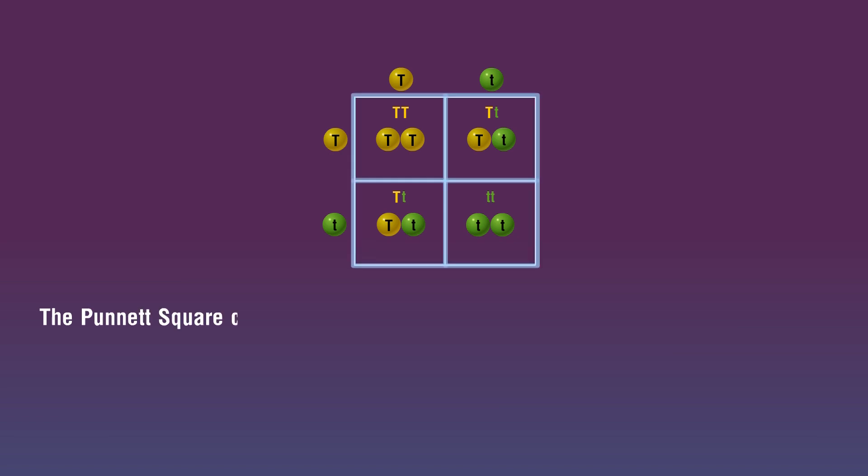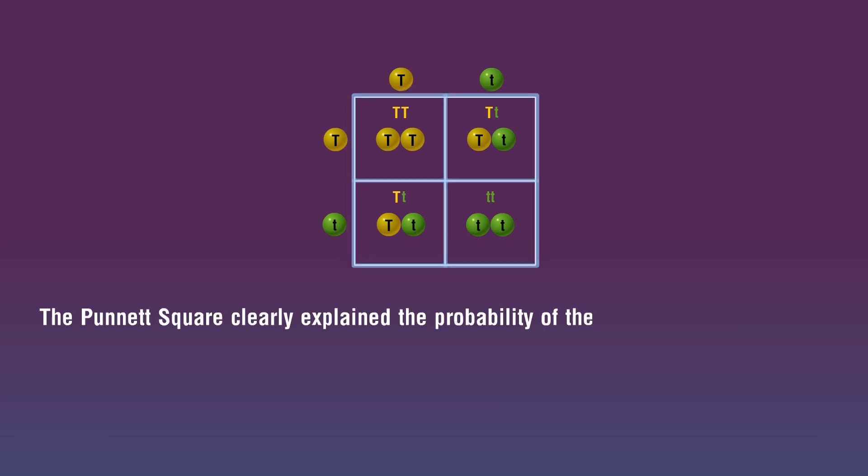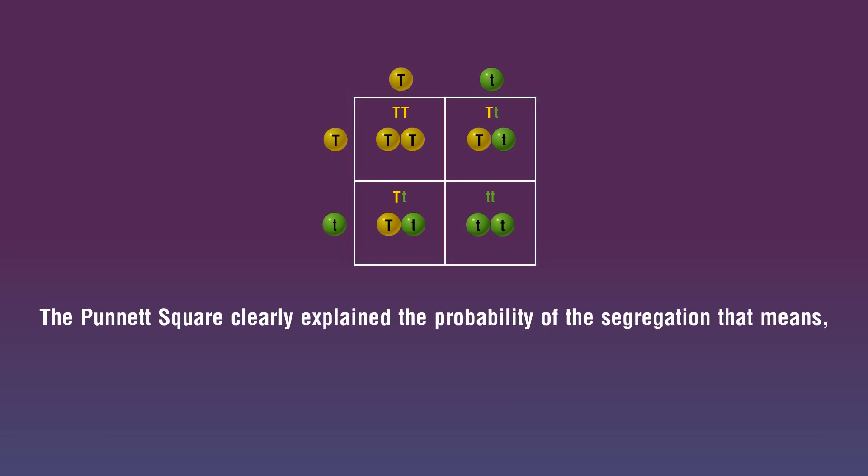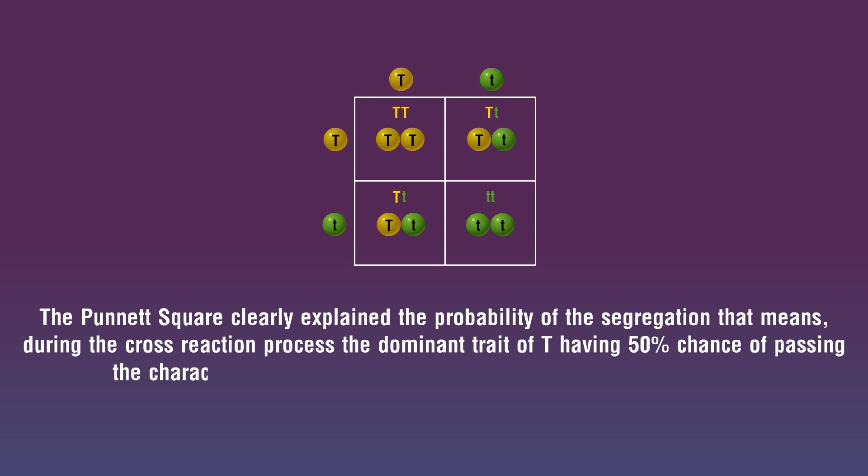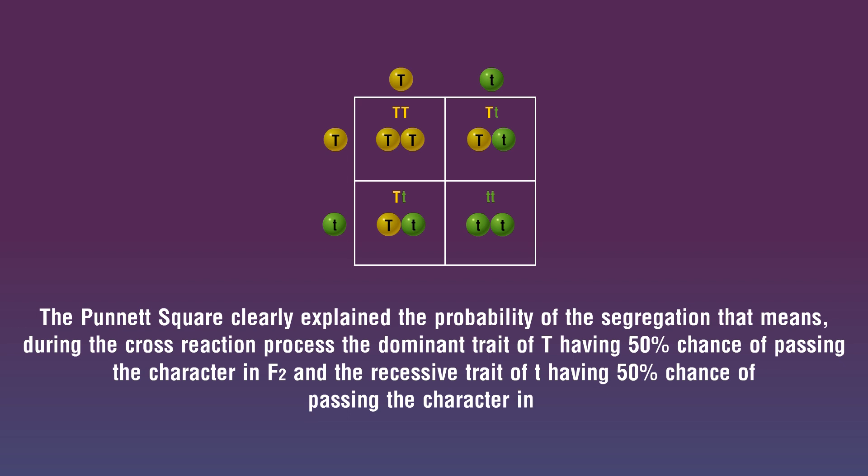The Punnett square clearly explained the probability of the segregation. That means, during the cross-reaction process, the dominant trait T having 50% chance of passing the character in F2 and the recessive trait t having 50% chance of passing the character in F2.